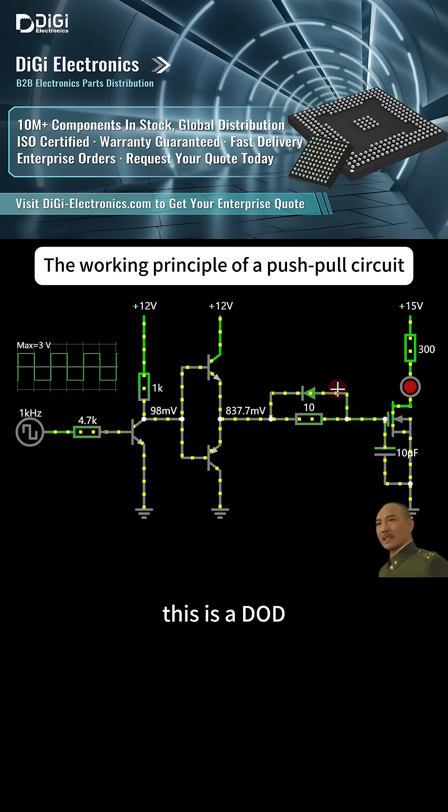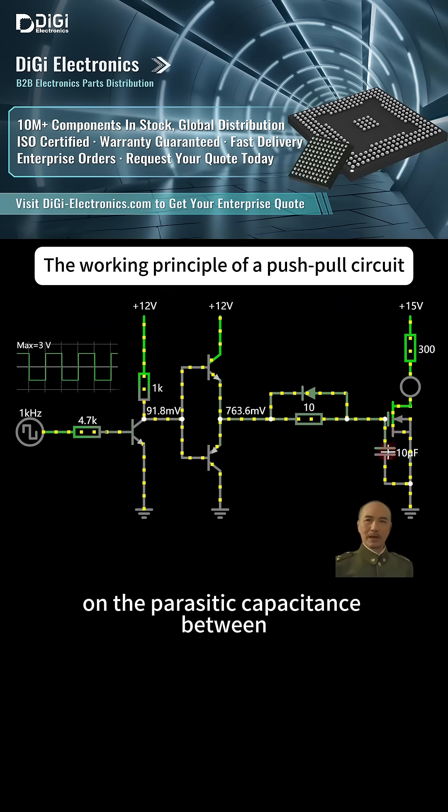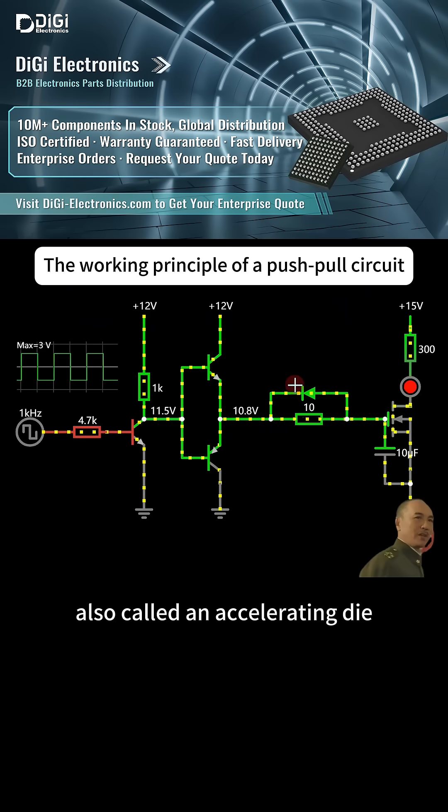This is a diode. Its function is to quickly discharge the voltage on the parasitic capacitance, also called an accelerating diode.